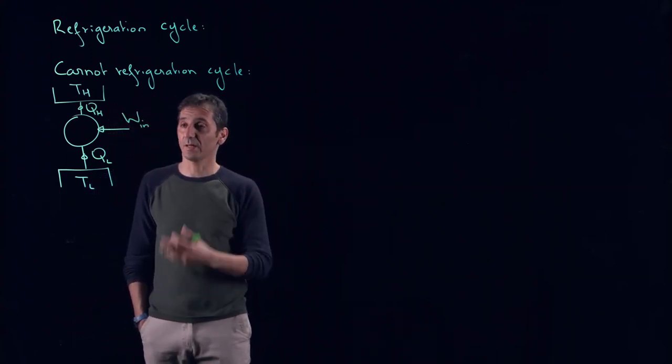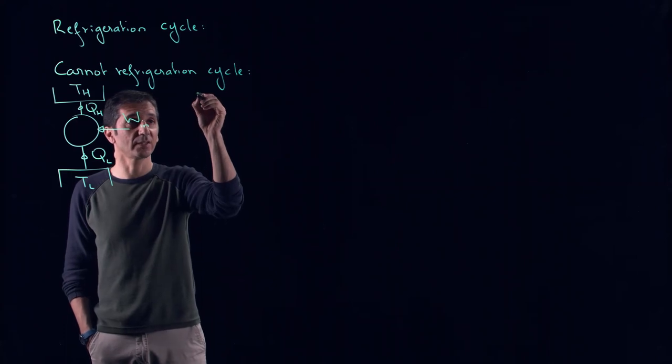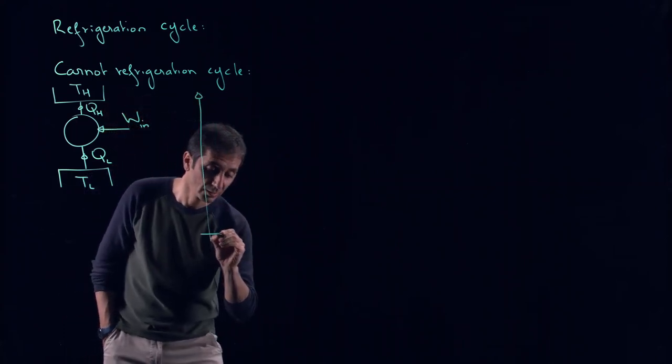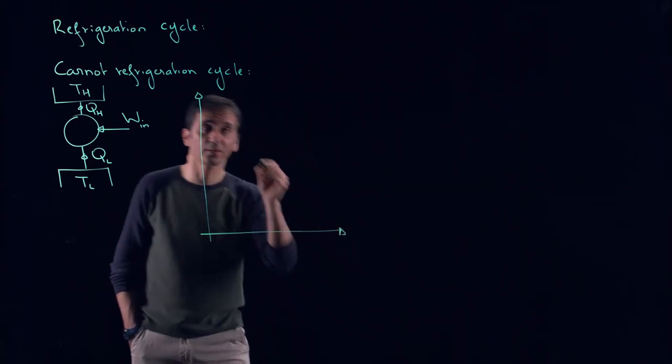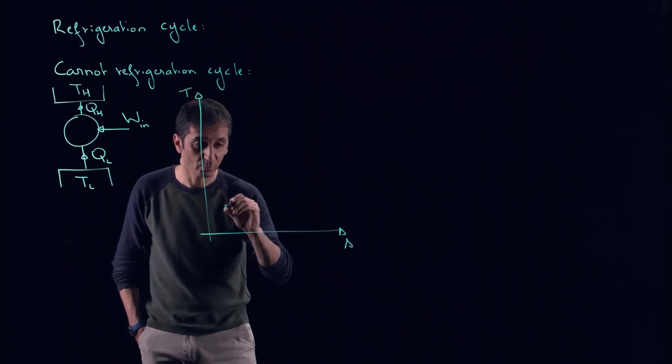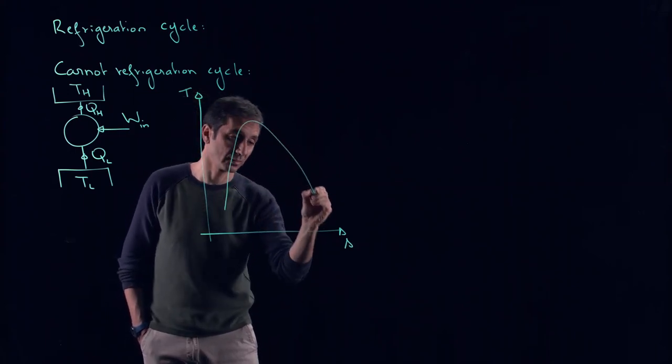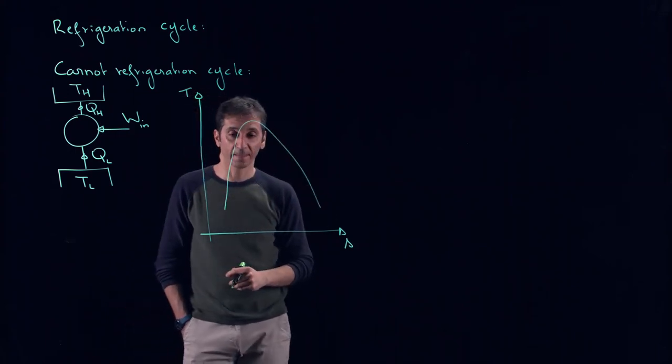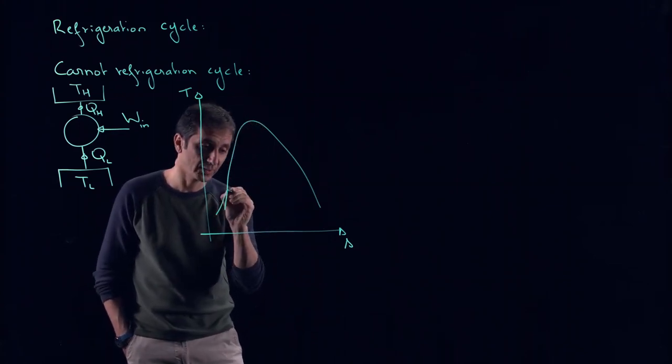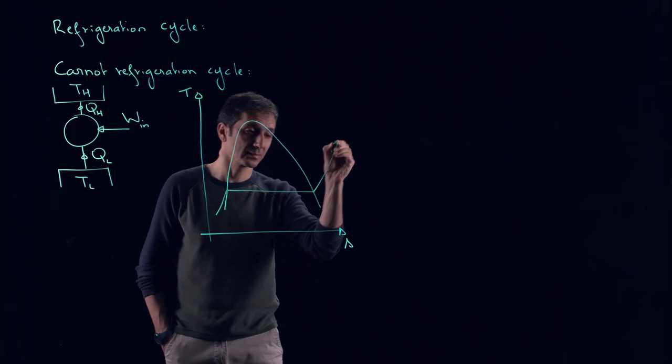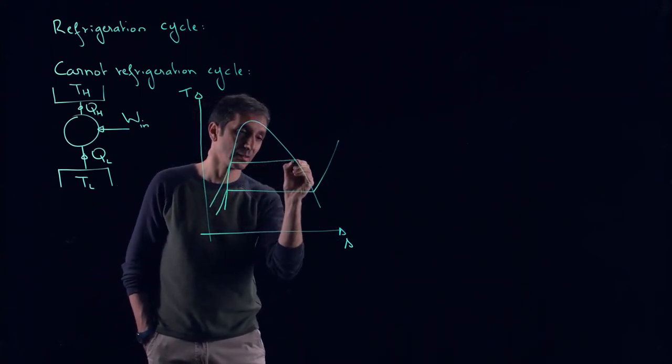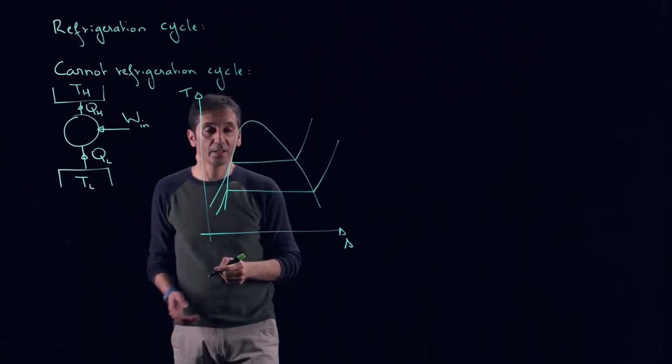Now, if I have to sketch a T-S diagram for our Carnot refrigerator, we have a refrigerant. Therefore, we'll have to go back to our bell curve, the dome, and we are playing between two different pressure lines.